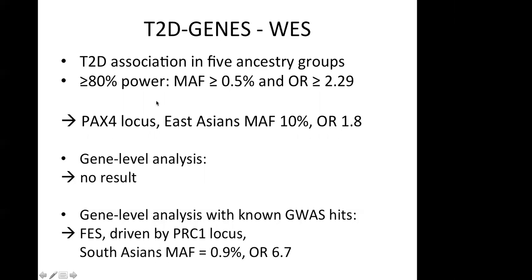The T2D Genes Consortium, which performed exome sequencing across five ancestry groups, also conducted power analyses and found they had more than 80% power to detect variants with minor allele frequency above 0.5% and an odds ratio above 2.3. There they found only one significant locus: the PAX4 locus. The PAX4 locus was already known, but the variant is novel. It was only found in East Asians, where it has a minor allele frequency of 10% and an odds ratio of approximately 1.8, and was virtually absent from all other populations.